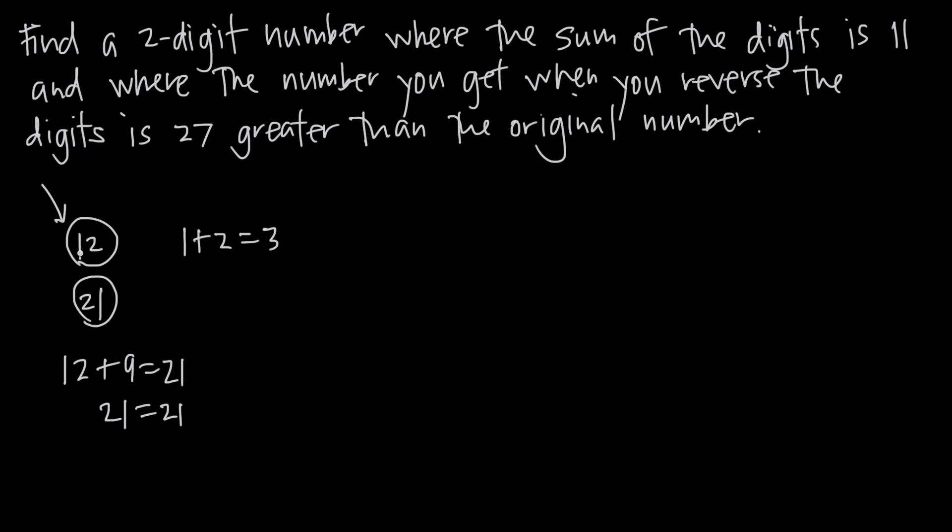We have to realize that we have a tens place and a units place. One is in the tens place and two is in the units place. So we'll go ahead and write our original number as tu. We know that the sum of the digits in this number is 11, so we know that t plus u is going to be equal to 11.